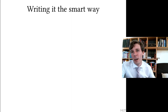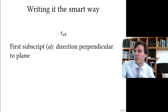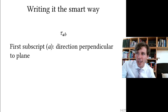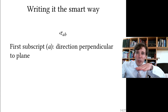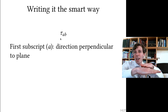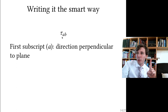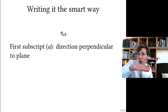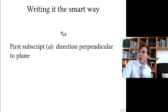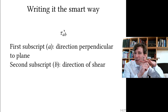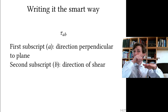There is a convention for writing shear: it is written with two subscripts — τ_ab. The first subscript, a, stands for the direction perpendicular to the plane you're looking at. The second subscript, b, gives the direction in which the shear is pointing on that plane. So a is the direction perpendicular to the surface, and b is the direction in which shear is pointing.